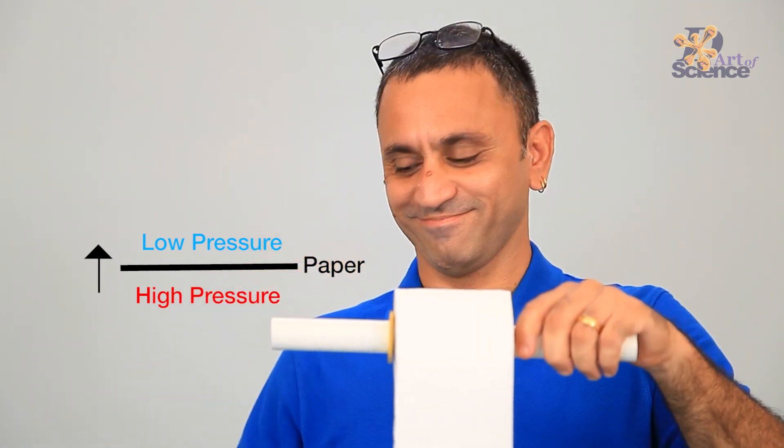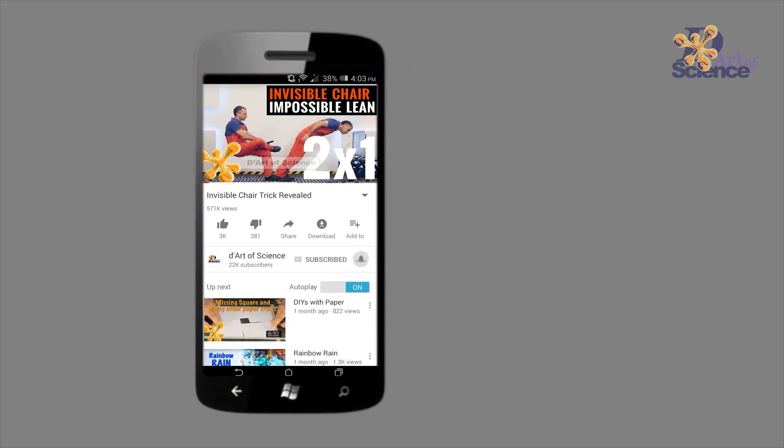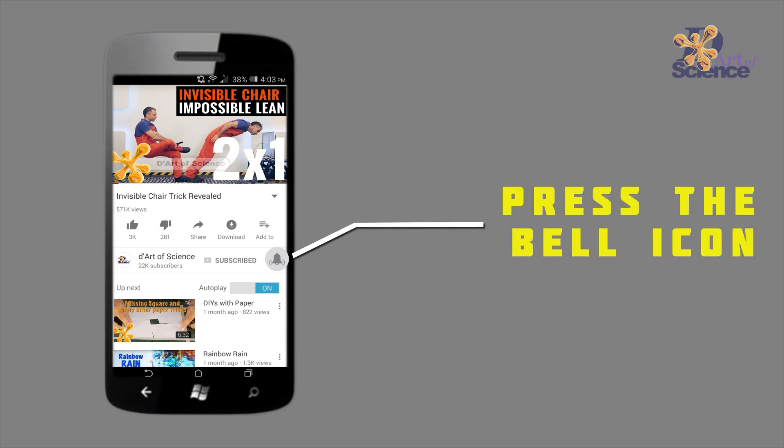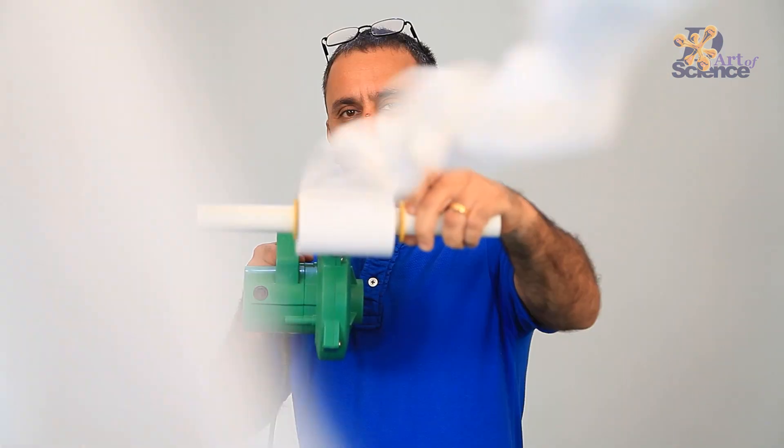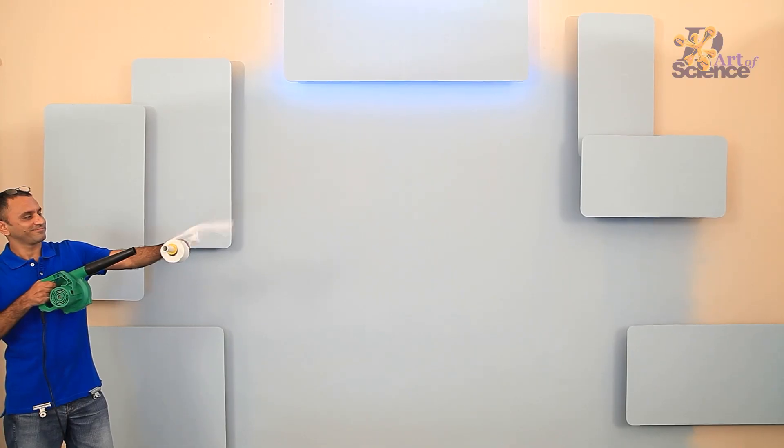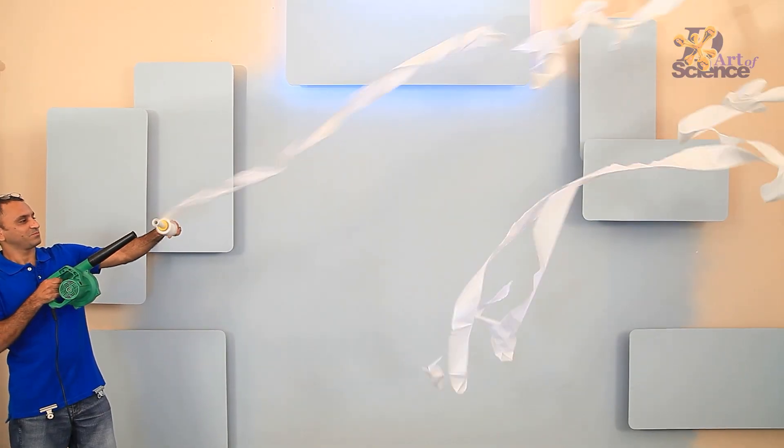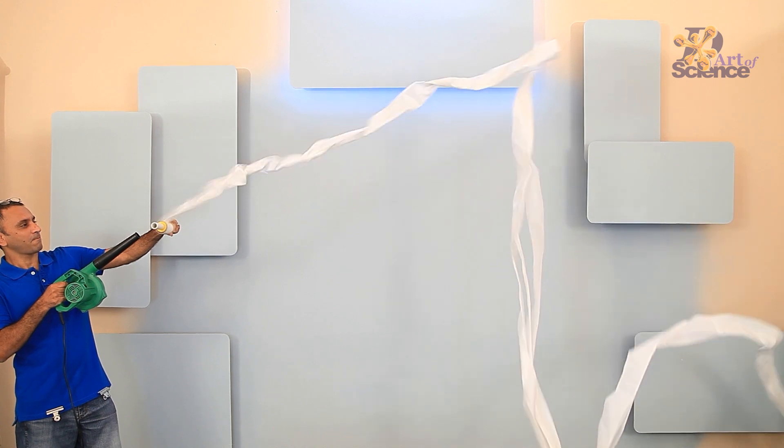Before we see a bigger version of this, why don't you subscribe to the channel and hit the bell icon so you never miss an update. To take this to the next level, you can make this cool toilet paper gun and basically make the toilet paper fly. I have linked the video up here and in the description box as well.